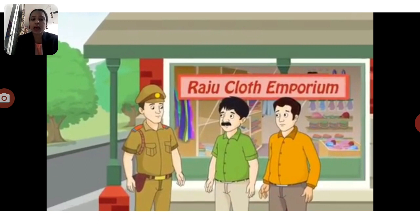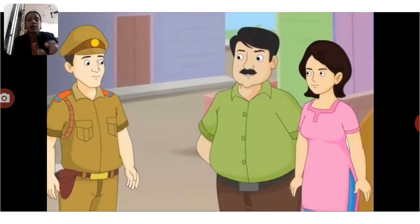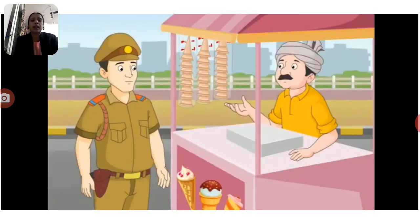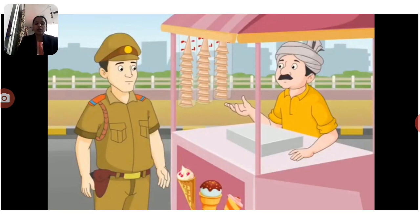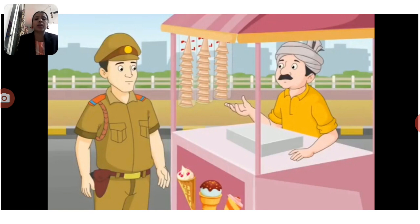Inspector Naresh then asked the ice cream vendor. The ice cream vendor said he had also seen someone at around 11 pm walking very fast. He described a bald man with a moustache who was walking very fast and kept looking back.